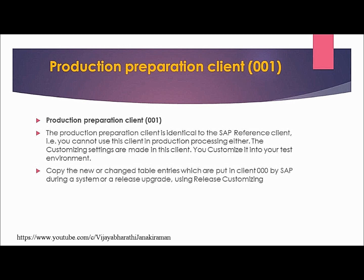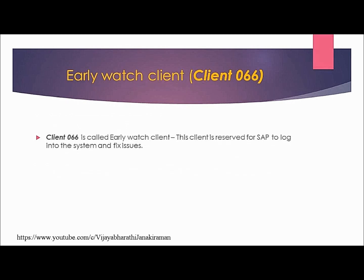Just like the SAP reference client 000, the production preparation client 001 is also copied into your test environment and should not be used for production processing. Client 066 should not be used for production processing either. Client 066, the early watch client, is exclusively for SAP to remotely log on to the system and fix any issues.